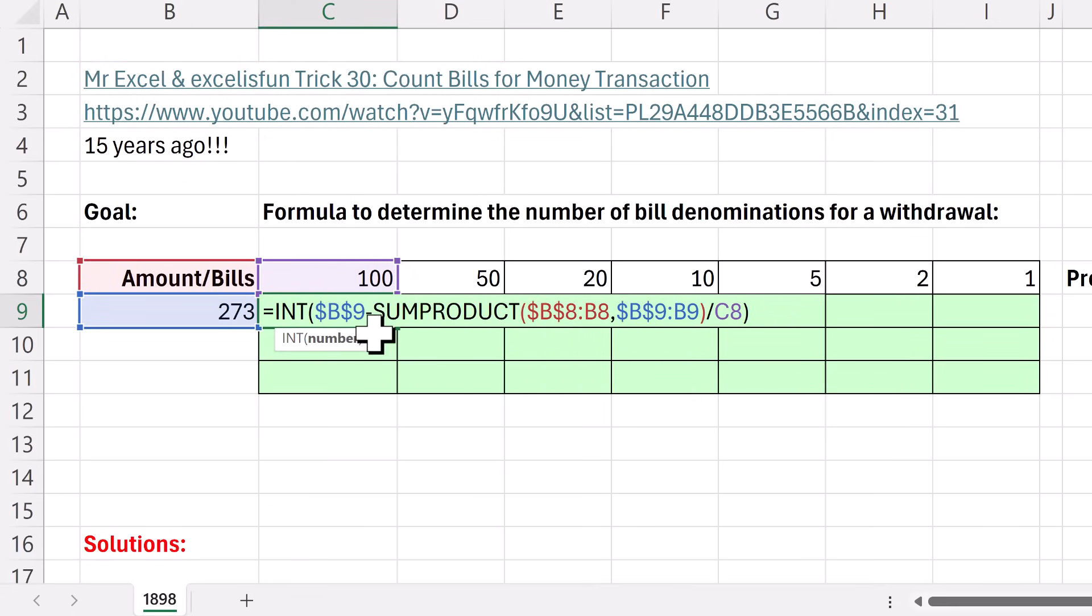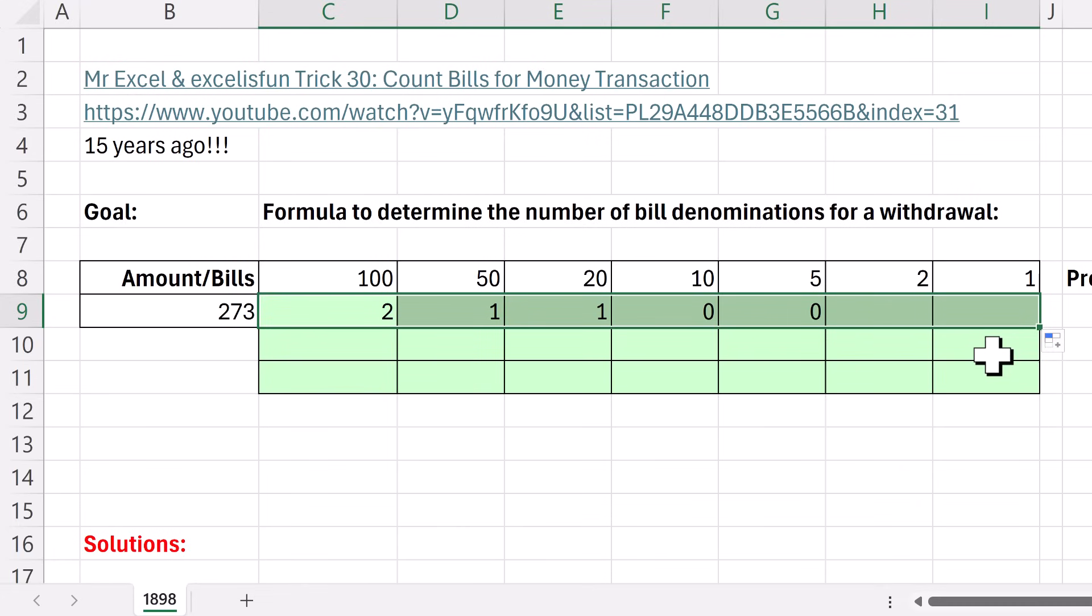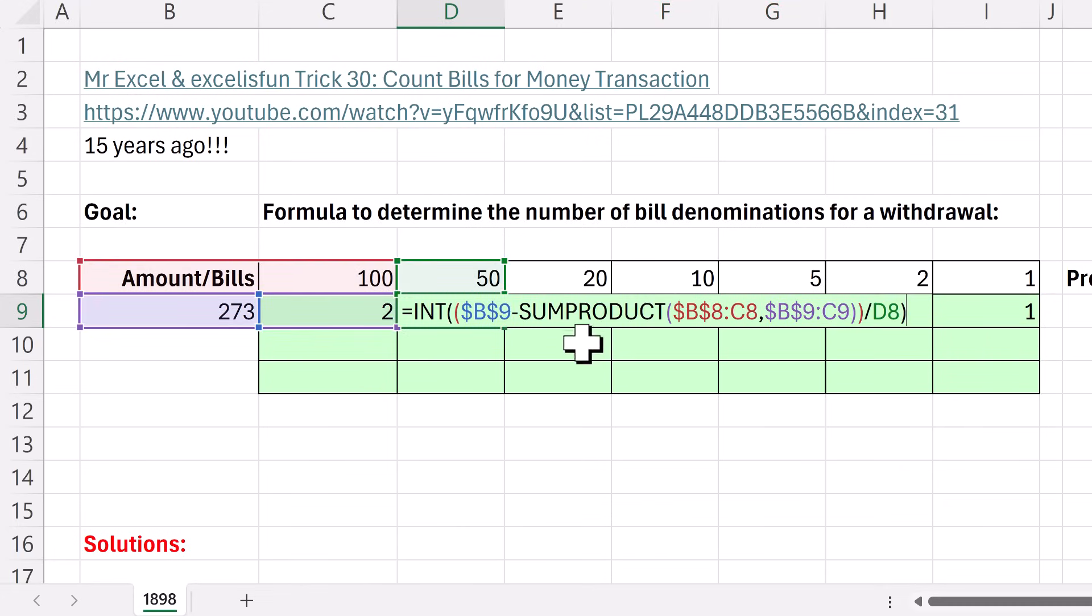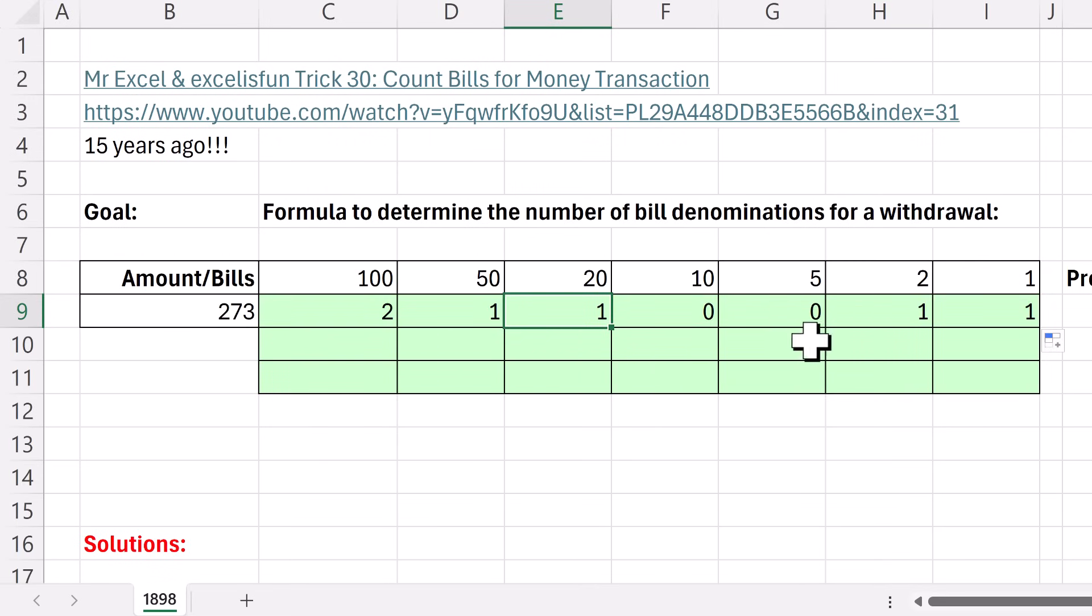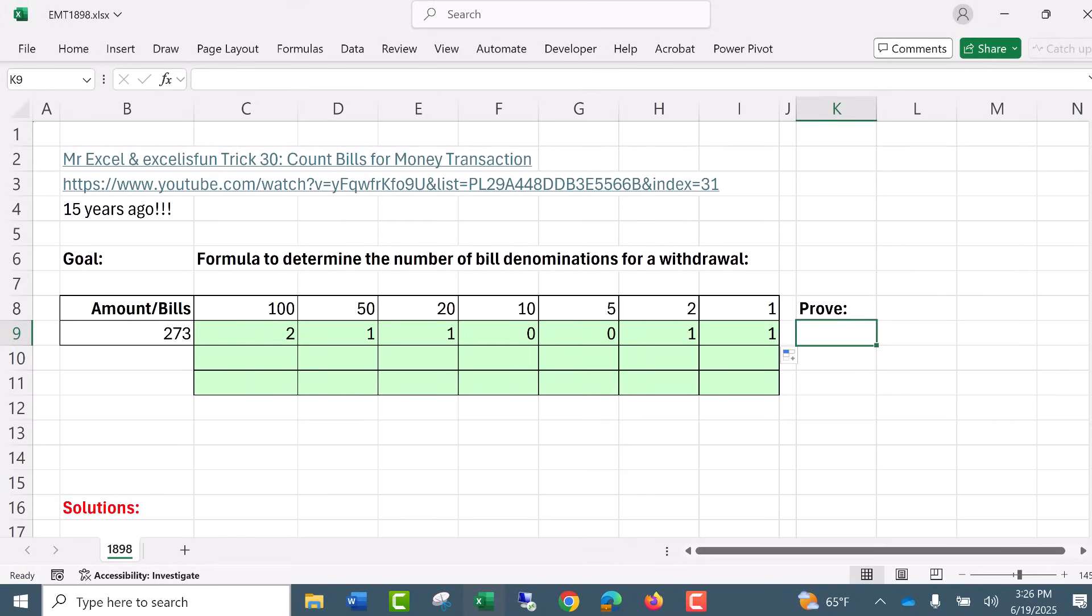Now we do need to, for subtraction before division, close, open, and that should do it. Control enter. Copy it to the side. F2. F2 again. And sure enough, the ranges are expanding and we're getting the correct number. Now we can prove it equals sumproduct. Highlight. Those are the bills. F4, comma, and whatever number of bills. Close. Control enter. That is looking good. 273.